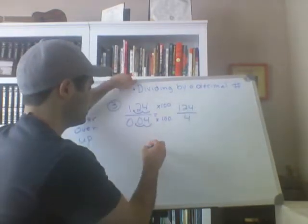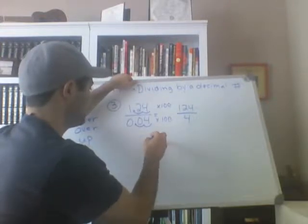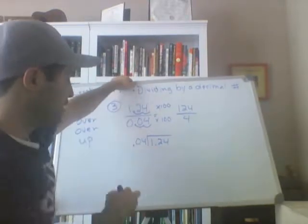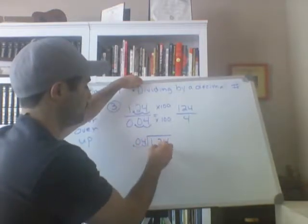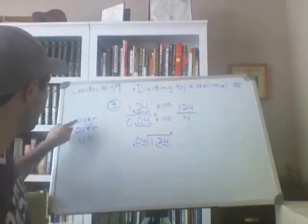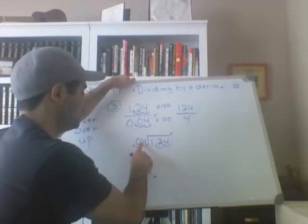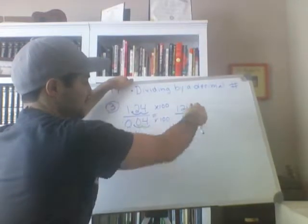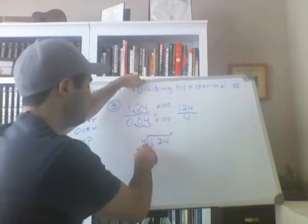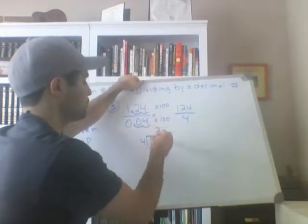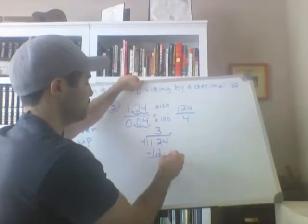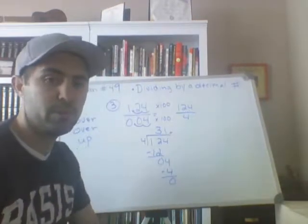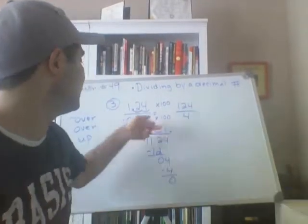Another way to look at it: if you were to do it as a division problem, it would be 1 and 24 hundredths divided by 4 hundredths. I'm going to move the decimal point two places to the right — over, over, and then decimal point up. That's the over, over, up method. So now all we have is 124 divided by 4. 4 can't go into 1, so we go 4 into 12 three times. 3 times 4 is 12. Subtract — 0. Bring down your 4. 4 will go into 4 one time. 1 times 4 is 4. No remainder. So 31 is your answer — the quotient.